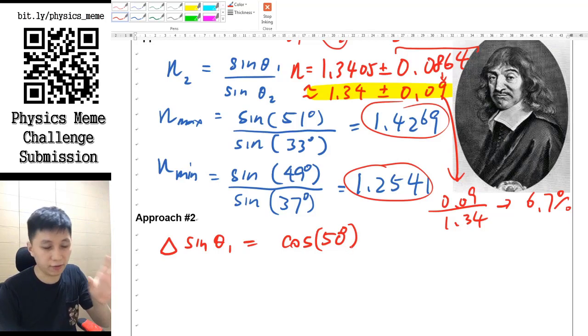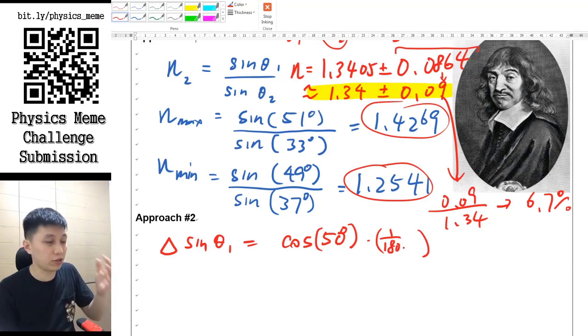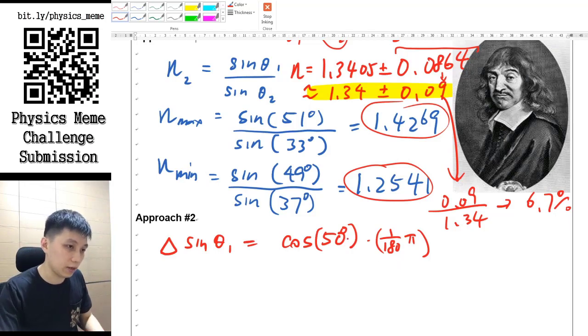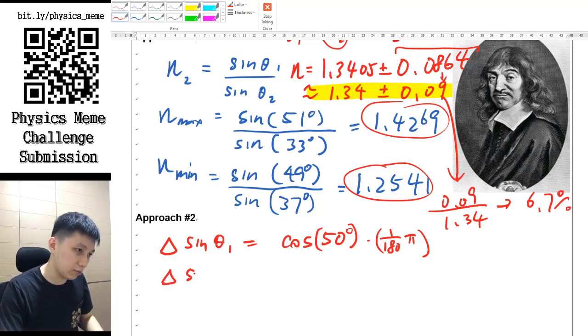However, you have to multiply with the uncertainty that is 1 degree in radians. So the way to convert it could be 1/180 because 180 degrees equals π. So this is one way of showing the uncertainty of sin θ₁. Similarly, we can do the same thing for sin θ₂, and that will be cos...